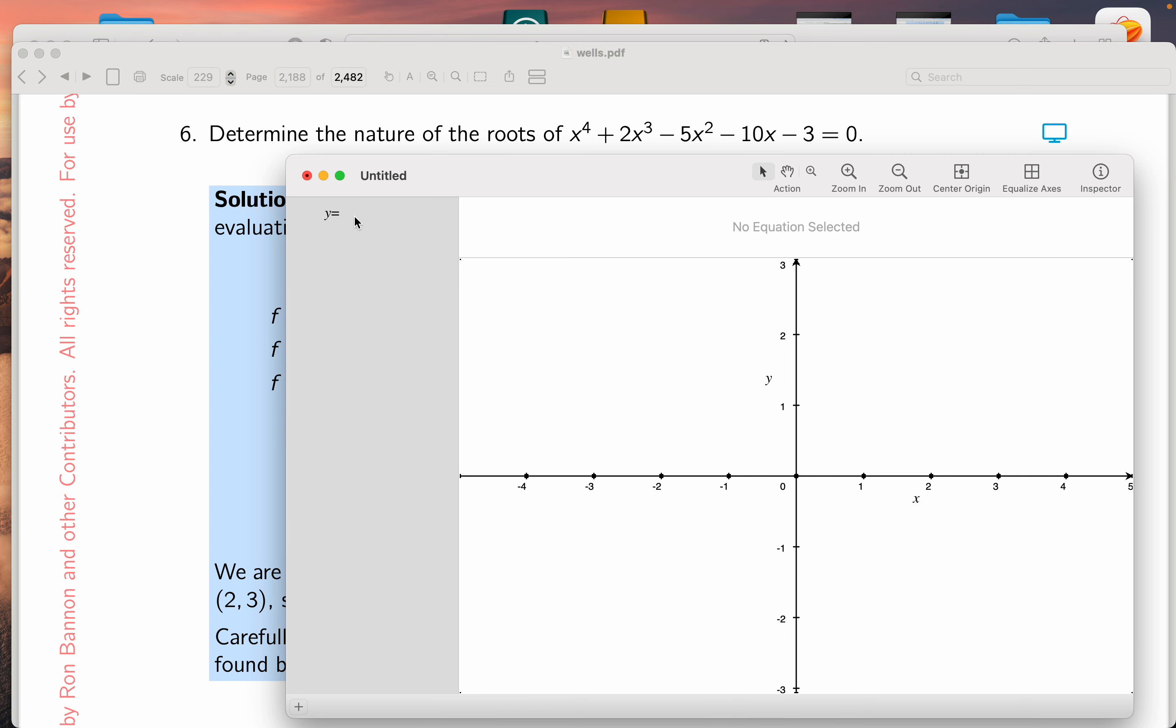And so what I'm going to do is I'm going to graph out that polynomial, which is x to the fourth, plus 2x cubed, minus 5x squared, minus 10x, minus 3.